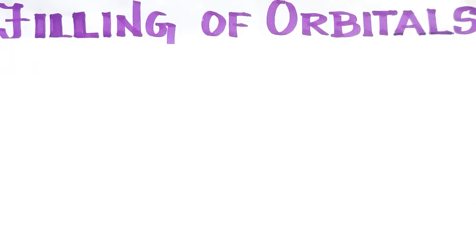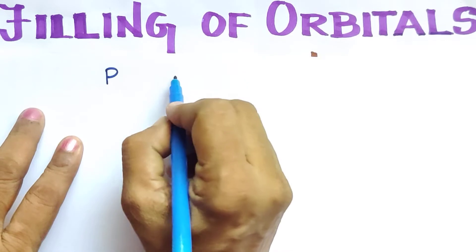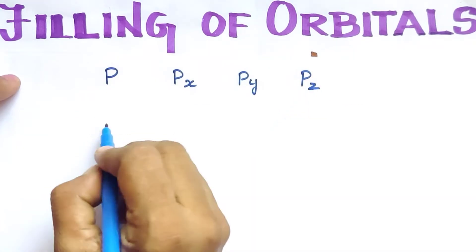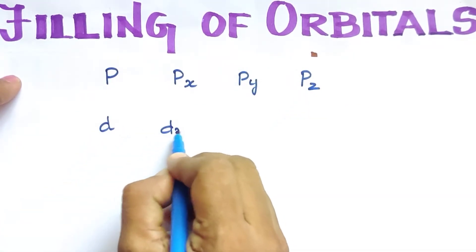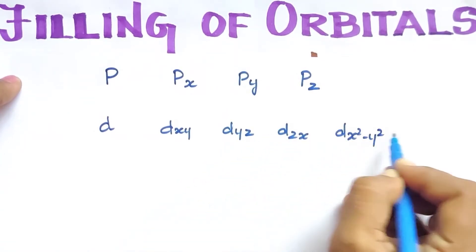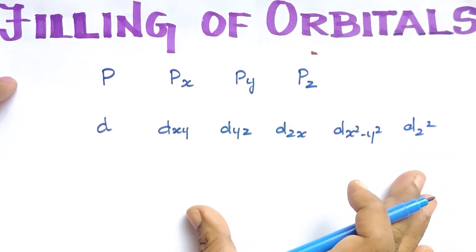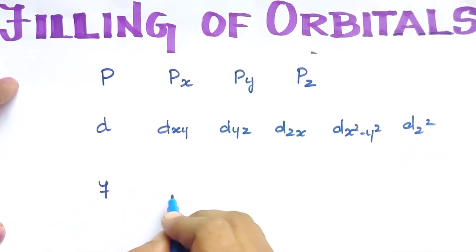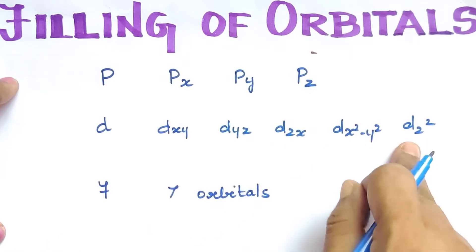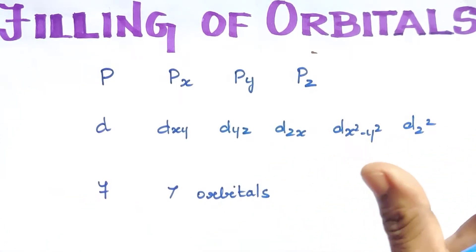But when orbitals have the same energy, electrons are filled in a particular way. For example, the D orbitals — DXY, DYZ, DZX, DX2-Y2, and DZ2 — are 5 orbitals all having the same energy. The F orbital has 7 orbitals of the same energy. These same-energy orbitals are called degenerate orbitals.